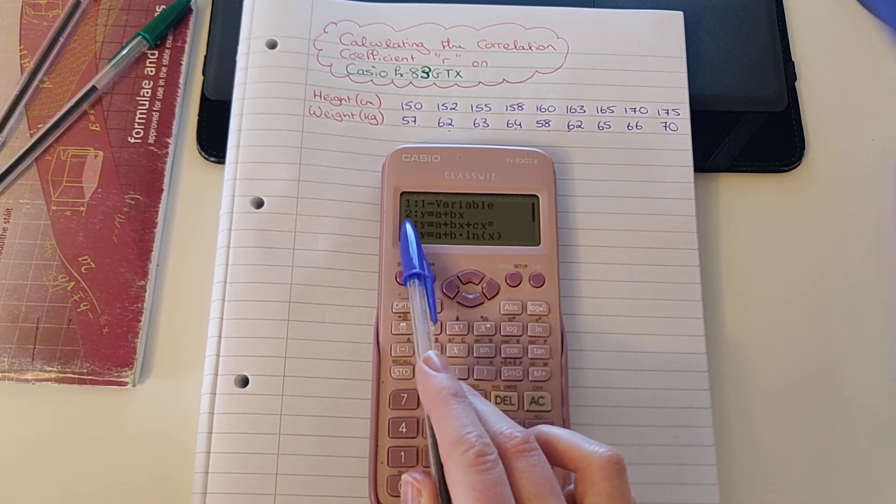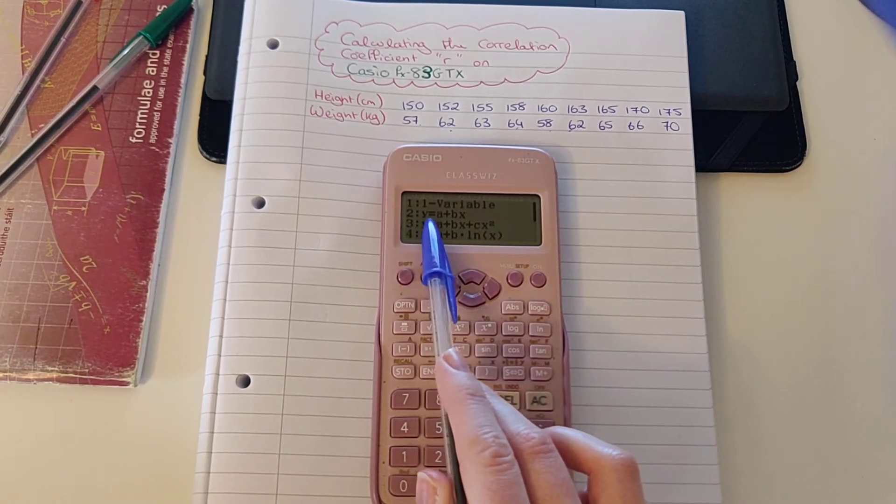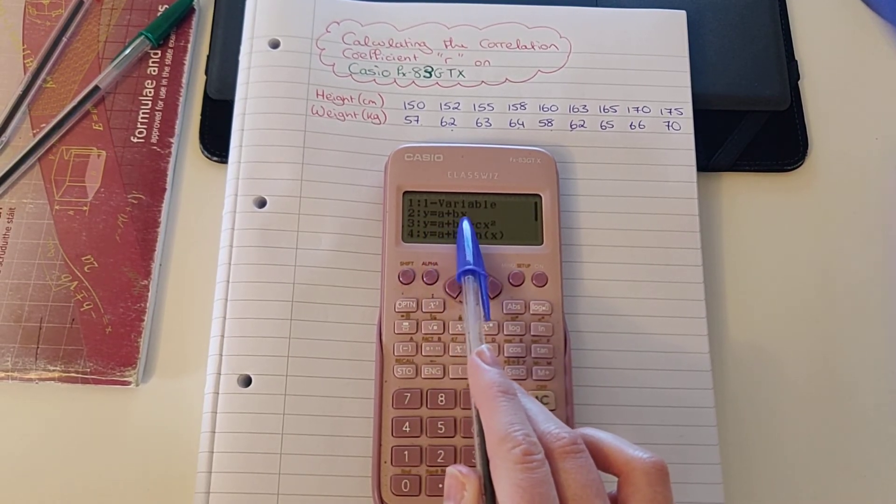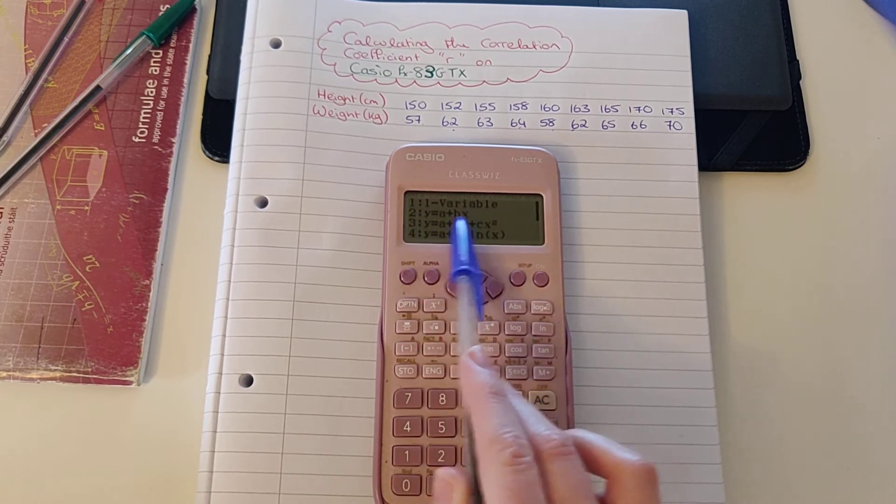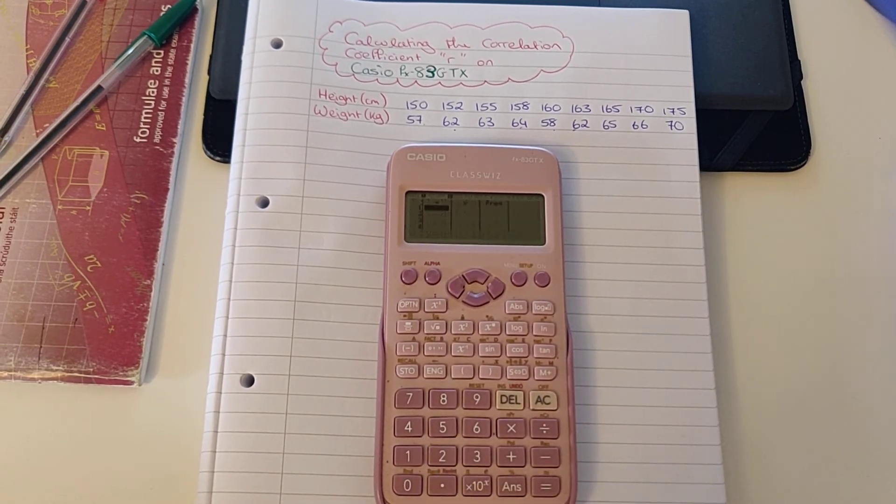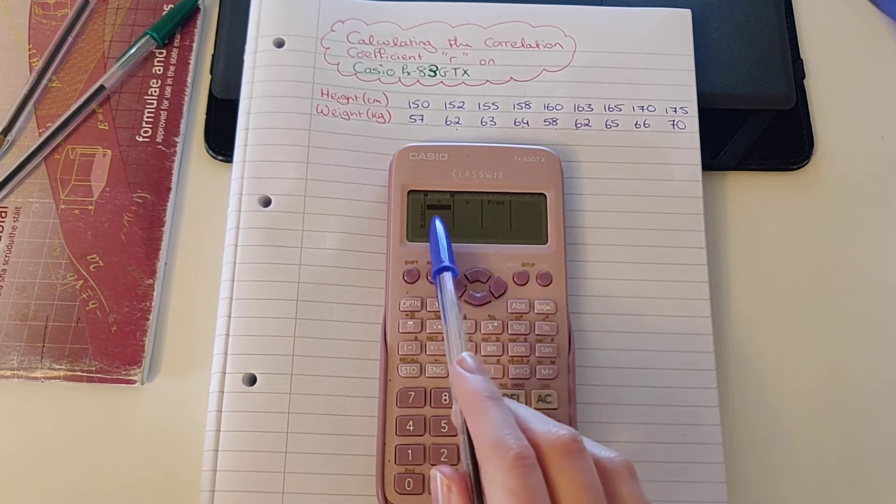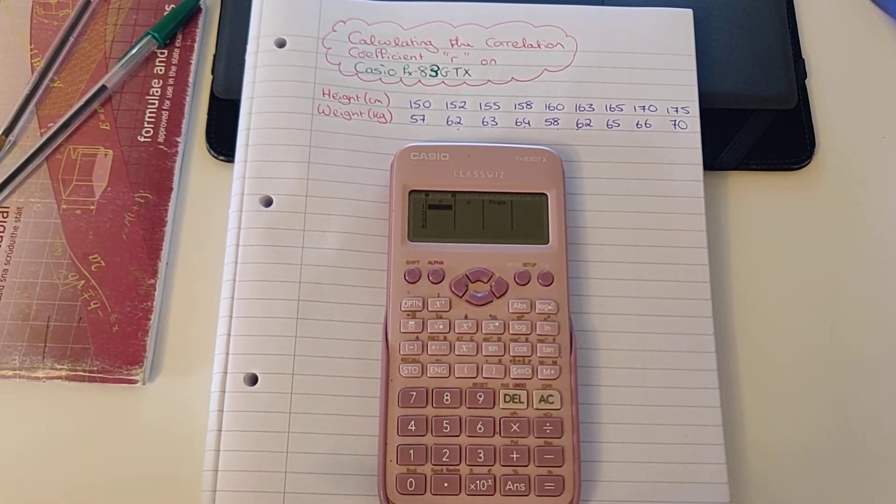Then we're going to press 2, which is equal to y equals a plus bx, because this is going to represent our line. So we press 2 again, and we get a table that looks like this, where we have our x values and our y values.